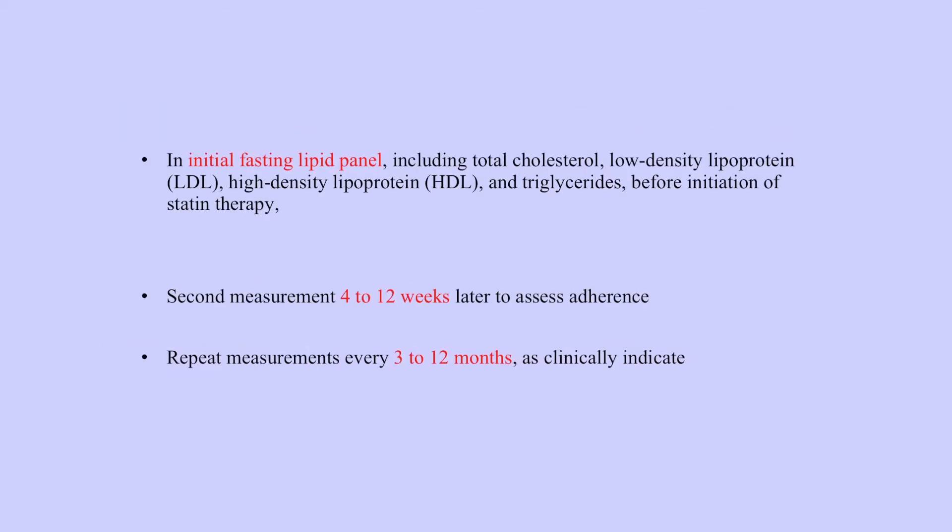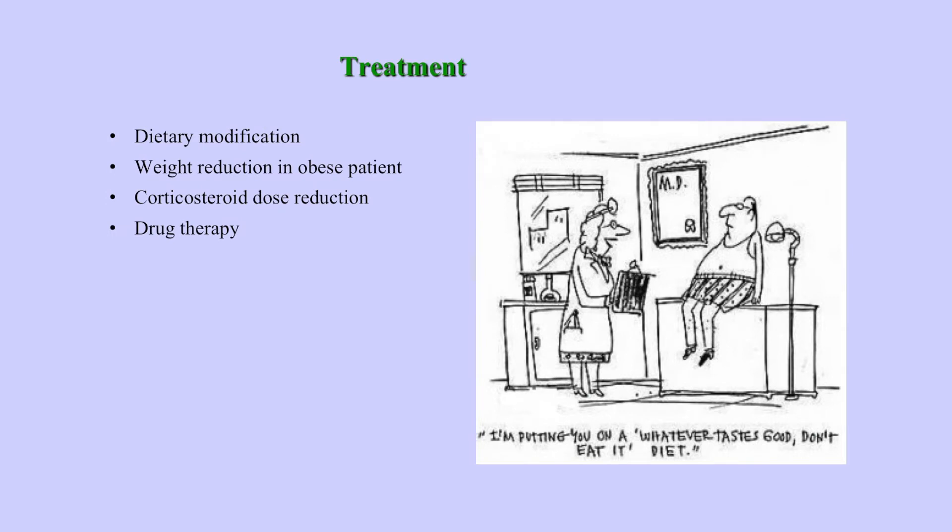For the initial fasting lipid panel, you should do total cholesterol, LDL, HDL, and triglycerides. If you have initiated therapy, the second measurement should be 4 to 12 weeks later, and repeat measurements can be done every 3 to 12 months. Treatment again includes dietary modification, weight reduction, and immunosuppression change.